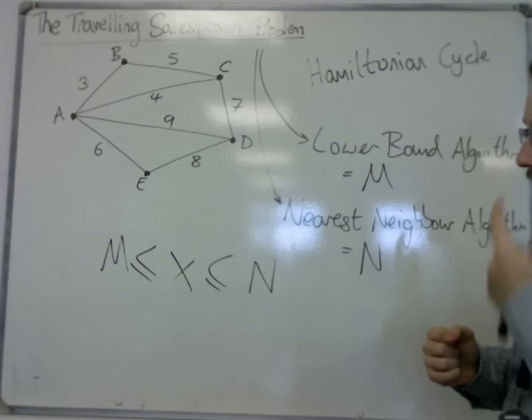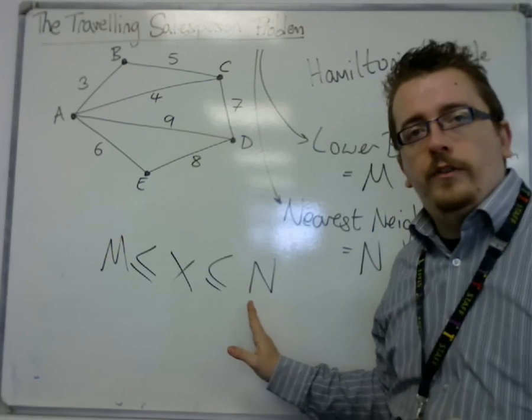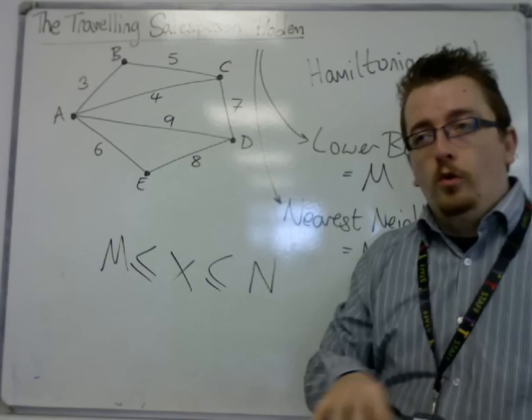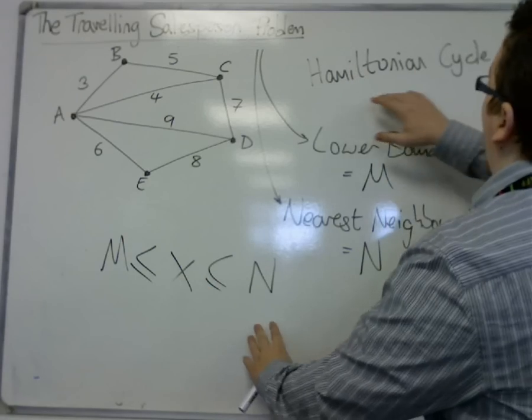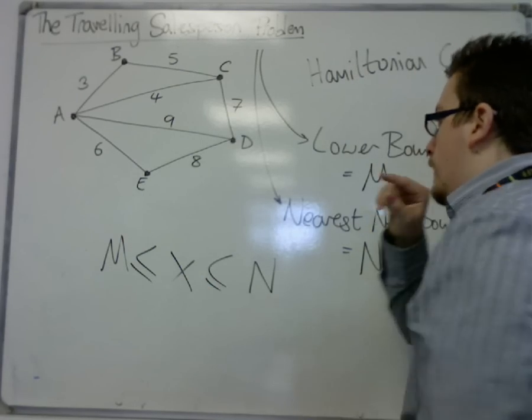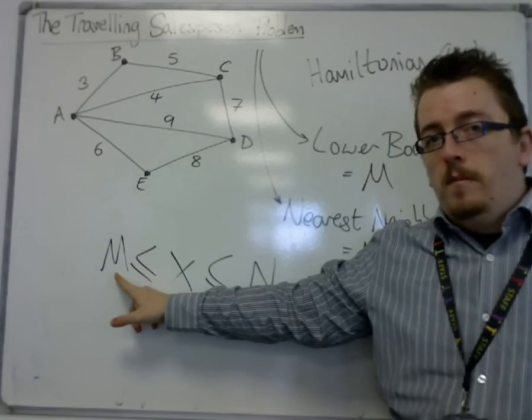What we will find, however, is that although N will most definitely give us a tour that will travel to each of the vertices to get back to where you started, it will give us a Hamiltonian cycle, the lower bound algorithm will give us a bare minimum.